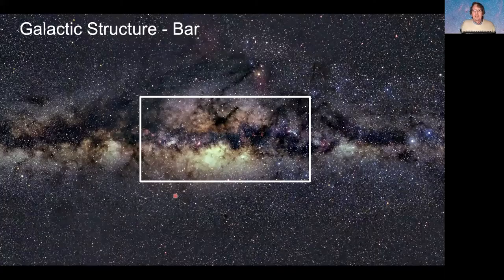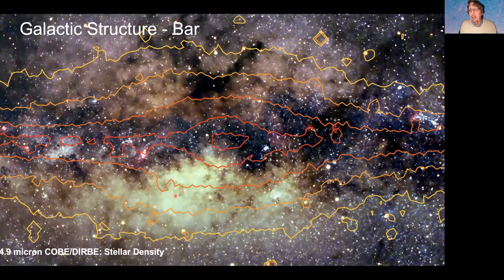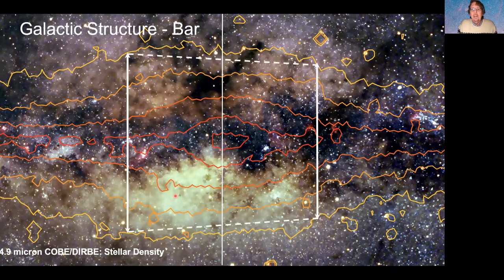Zooming into the center of the galaxy: behind all the optical gas and dust, the Milky Way has a bar — a collection of stars oriented diagonally. Infrared light reveals this bar. You can see that on the left side, the infrared contours are slightly thicker than on the right — that's the effect of the bar being nearer to us on the left and farther away on the right. It's a perspective effect showing the bar, and in the Milky Way schematic it's represented like this.